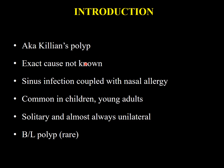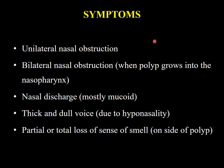The antrochoanal polyp is also known as Killian's polyp. The exact cause is not known, but it is considered to be sinus infection coupled with nasal allergy. It is common in children and young adults. It is usually solitary and almost always unilateral, although bilateral cases are reported but very rare. The main symptom is unilateral nasal obstruction.